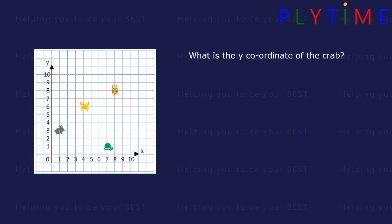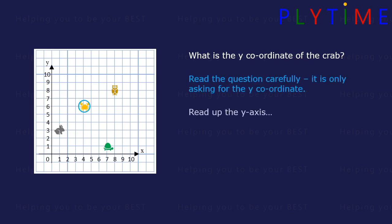What's the y-coordinate of the crab? Read the question carefully, it's only asking us for the y-coordinate here. First find the crab, then read up the y-axis. The y-axis coordinate is 6.